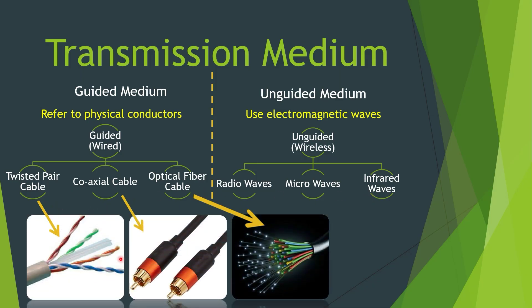Here you can see twisted pair cable, coaxial cable, and optical fiber cable. In twisted pair and coaxial cable, the signal travels as voltage and current signals, whereas in optical fiber the signal is in the form of light. A medium is characterized by its bandwidth, which defines the information-carrying capacity of the medium. The signal encodes the data in a form suitable for transmission on that medium.